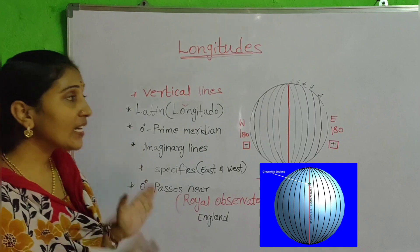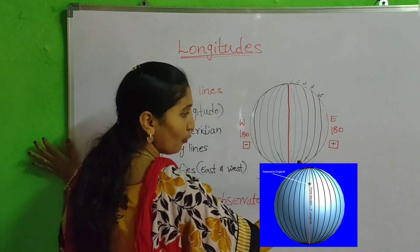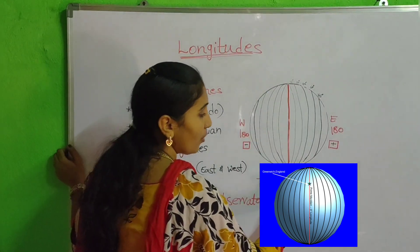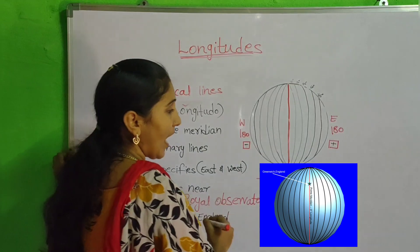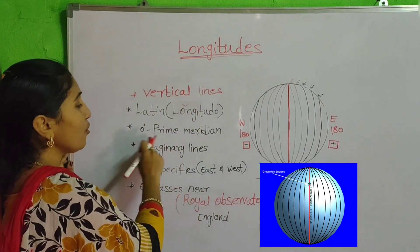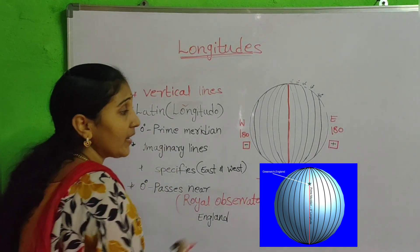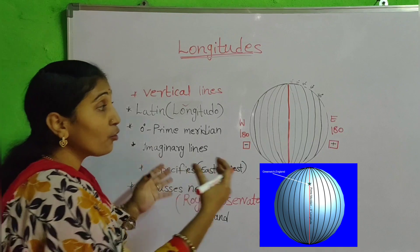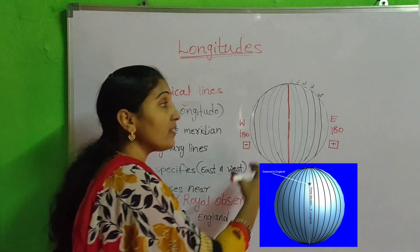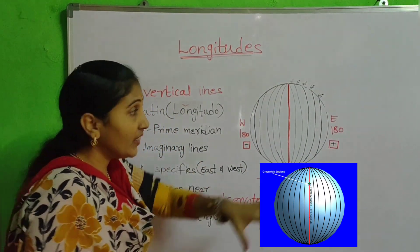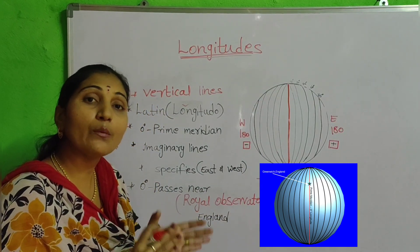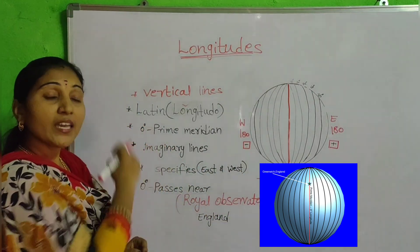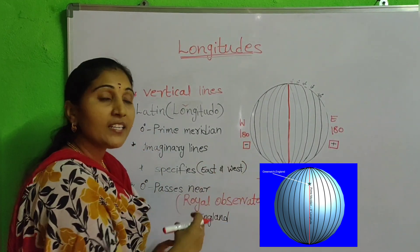Now coming to the longitudes, we can observe very clearly on the globe. Suppose you think that this is a globe — a spherical shape. The red color mark here is the 0 degree longitude, which is most important and is called the prime meridian. This 0 degree longitude, called the prime meridian, gives us the information that the globe is divided into the Western Hemisphere and the Eastern Hemisphere. The entire globe is divided into two equal halves, and the prime meridian specifies the Earth into its Western part and Eastern part.